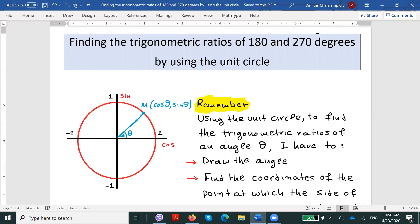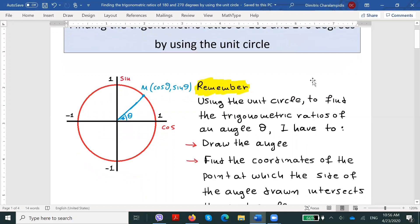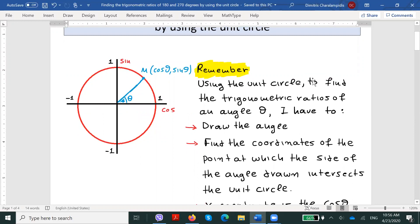Remember also that using the unit circle to find the trigonometric ratios of an angle theta, all I have to do is draw the angle and then find the coordinates of the point at which the second side of the angle drawn intersects the unit circle. Let's call this endpoint M.